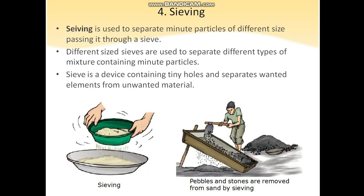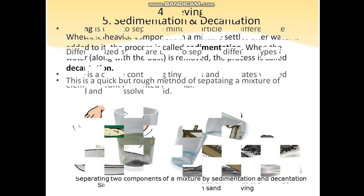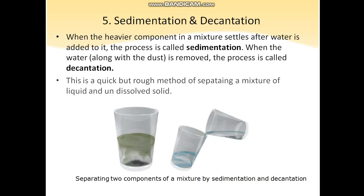A sieve is a device which has tiny holes in it. It allows finer particles to pass through it while the heavier and bigger particles remain above it. Such a process is used to filter flour and to remove pebbles and stones from sand by a mason.